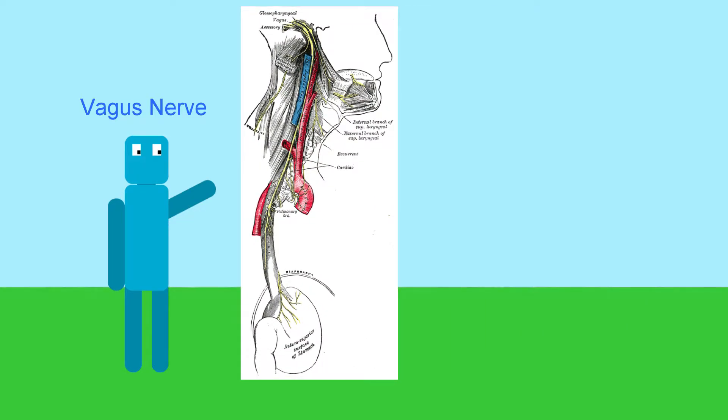So most cases of fainting are caused by what's known as vasovagal syncope. This involves the vagus nerve, which is the longest nerve in the autonomic nervous system. That's the part of the nervous system that controls involuntary functions.